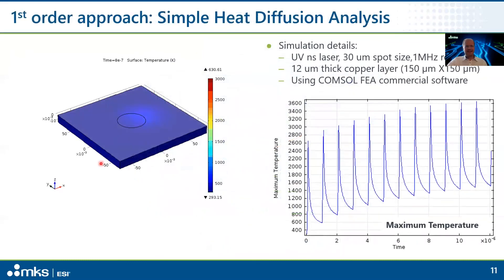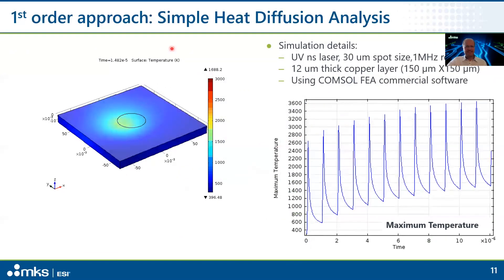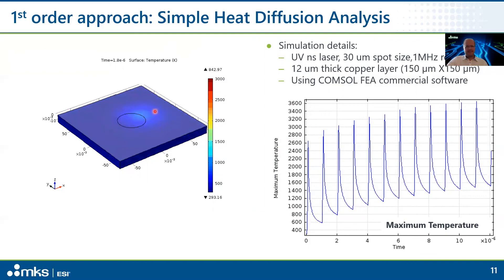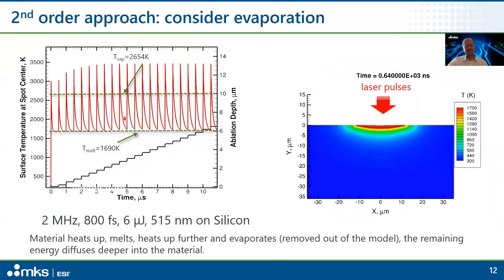If you want to be more refined, you can solve the heat diffusion equation with finite element analysis commercial software fairly straightforwardly. Here we have an example of a UV nanosecond laser with a given spot size and rotation rate carving out a trajectory, creating a three-dimensional heat map inside the part as well as its time dependence. But often we don't want to heat treat a material — we want to actually remove it — so this is insufficient. You have to consider phase transitions.